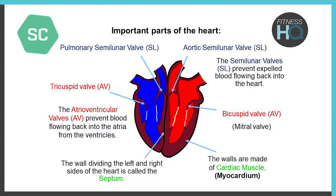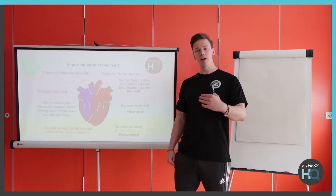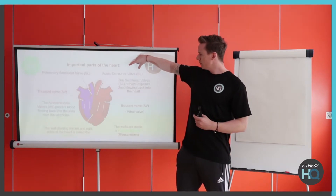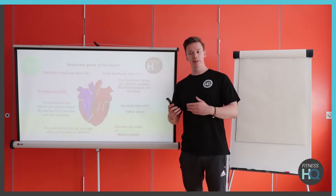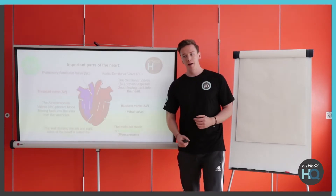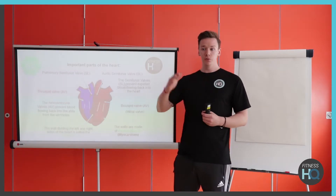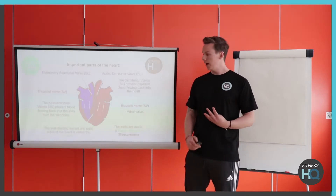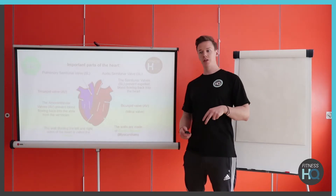The semilunar valves are a little bit easier because they're linked to the artery or vein that they're pumping out to. On the right-hand side we've got the pulmonary valve, going into the pulmonary artery. And we've got the aortic valve as well, which obviously links to the aorta. Their job is to stop blood coming back into the heart. So in total we've got four valves: two atrioventricular and two semilunar.